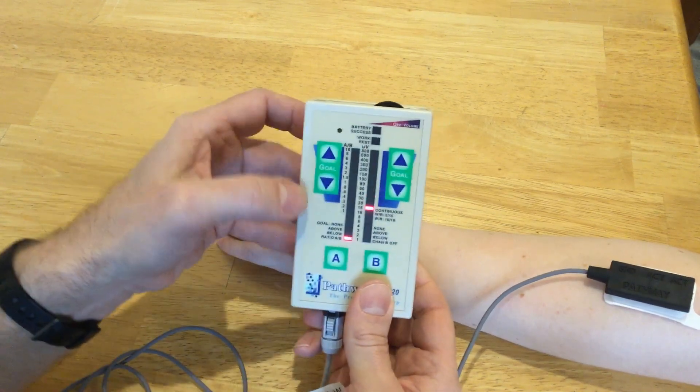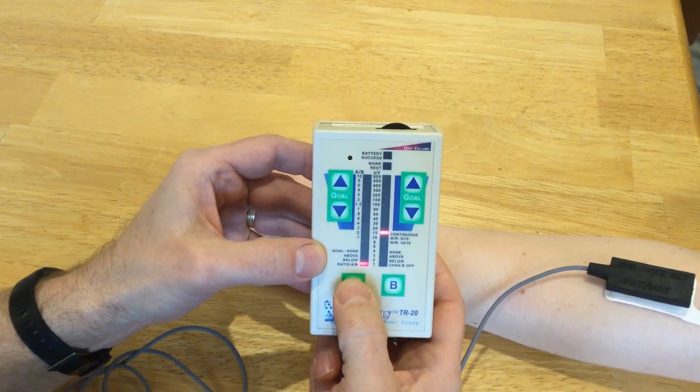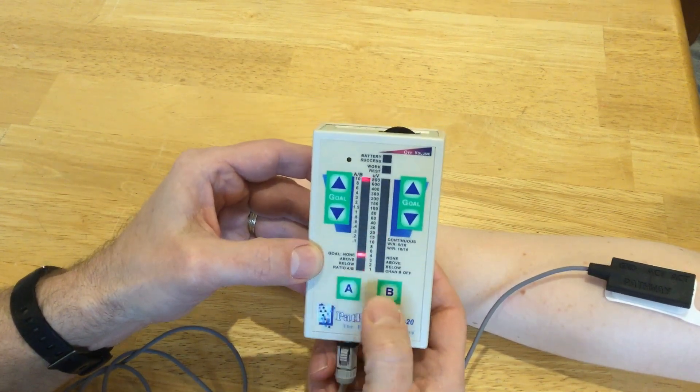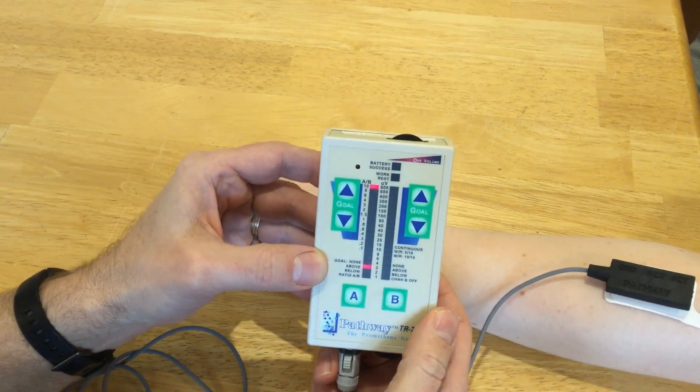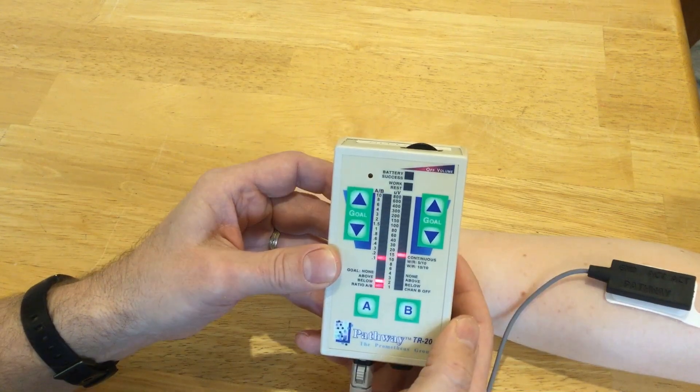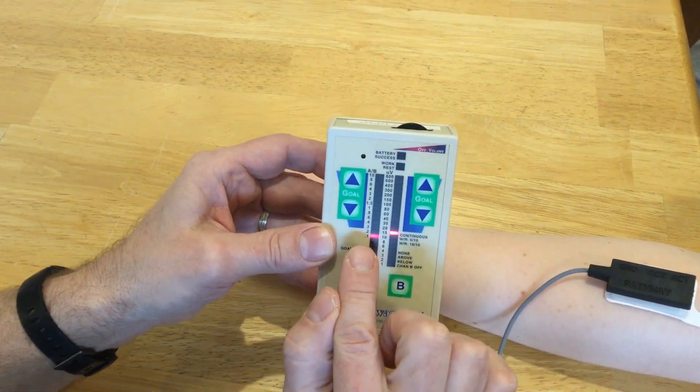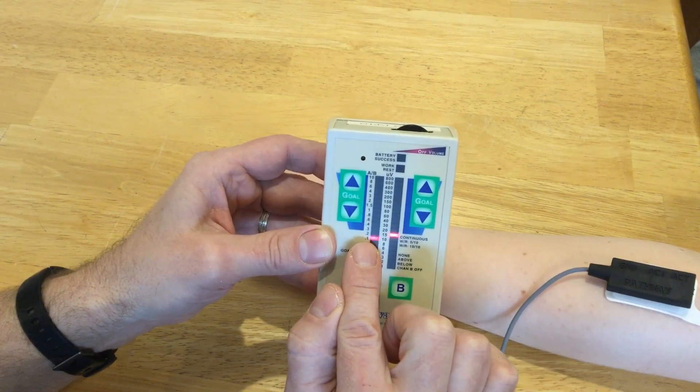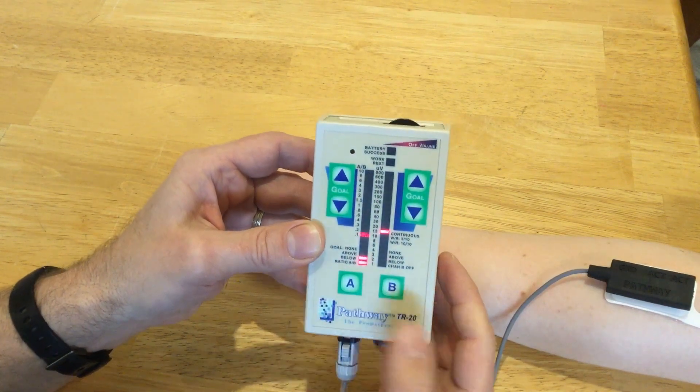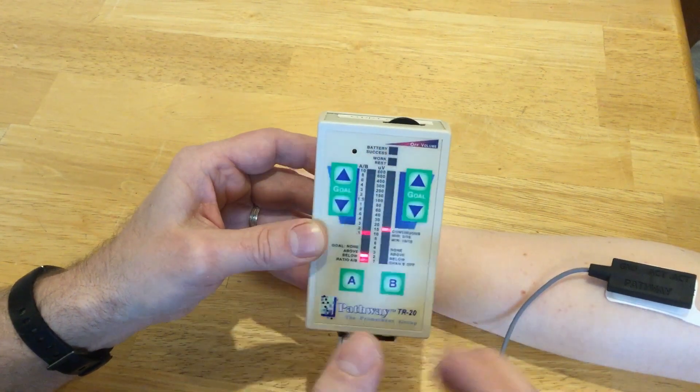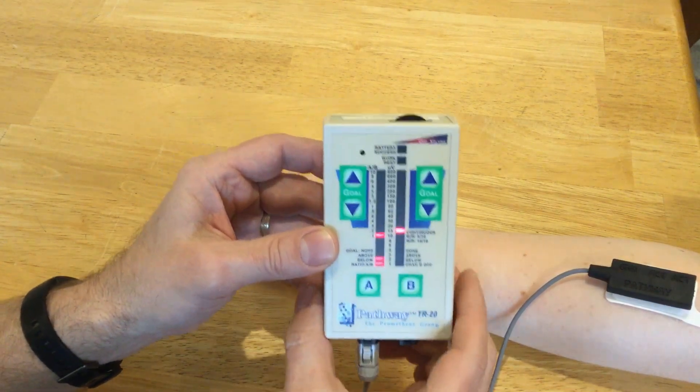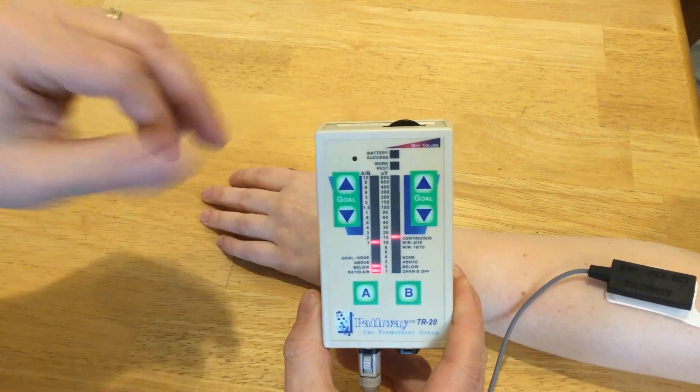I'm just going to do a quick goal above here, so I'm going to push this A button again. It says goal none - no, that's not what I want. I want goal above. Okay, and right now you can see that the goal is set at 0.1, so anytime she goes above 0.1 a little light up here that says success will go on, and also there's a little chime that sounds.